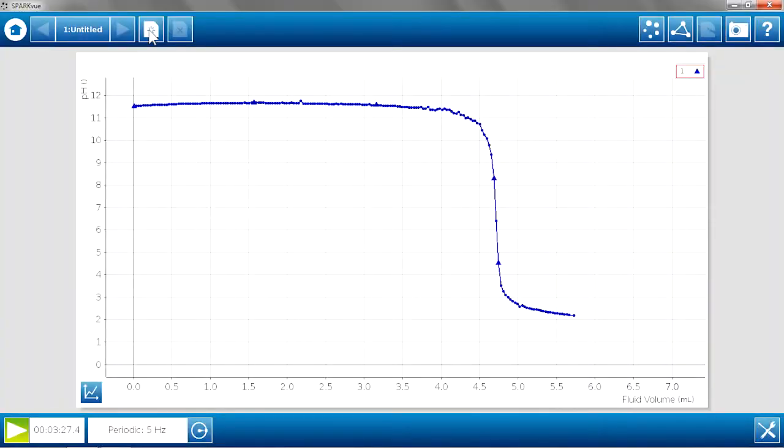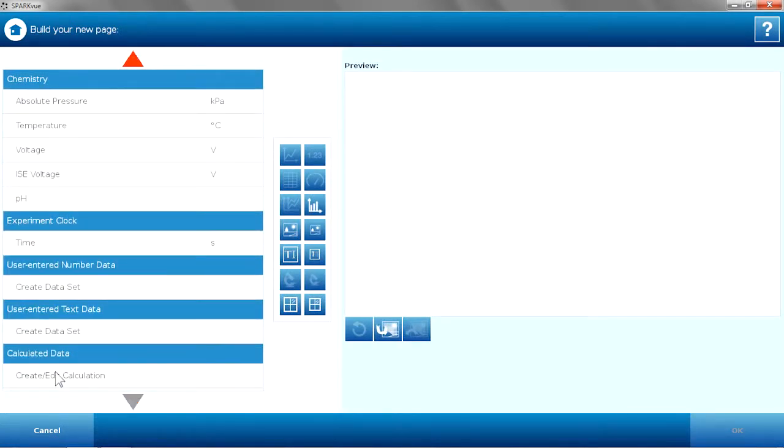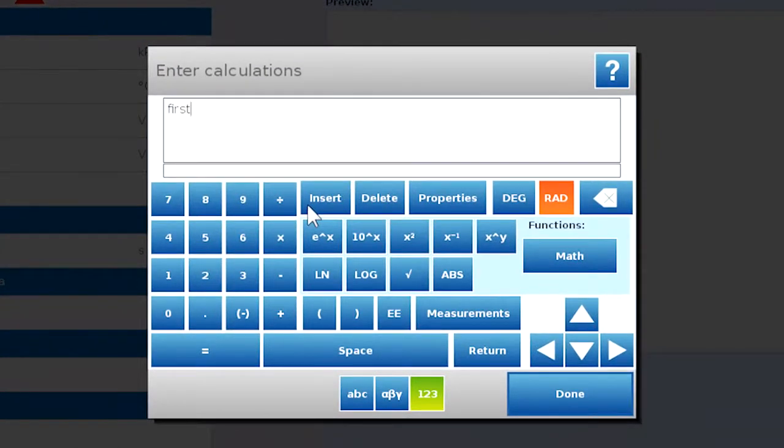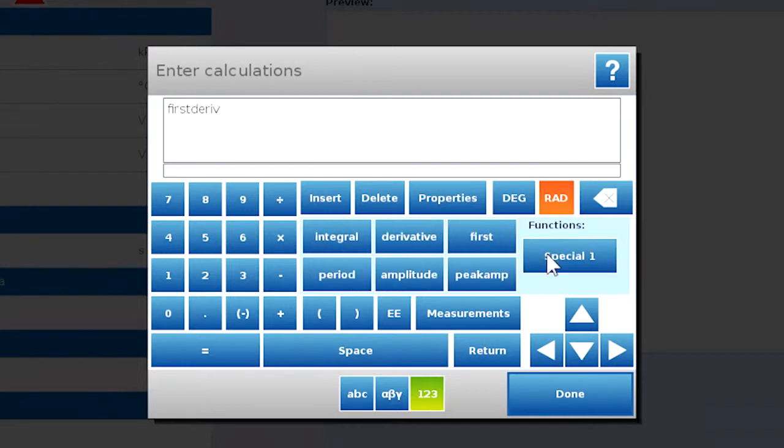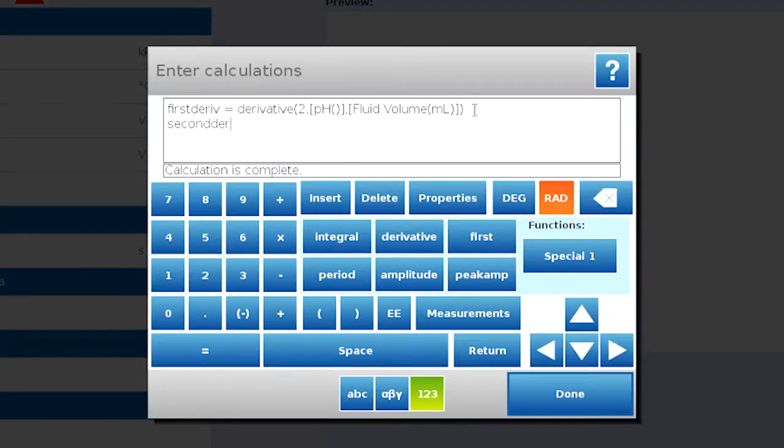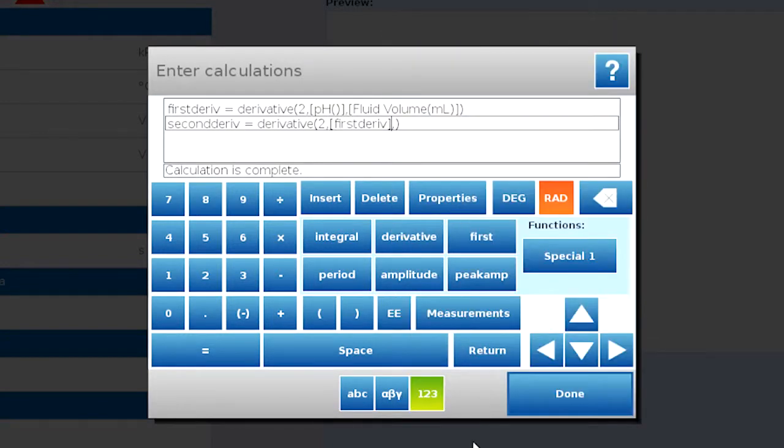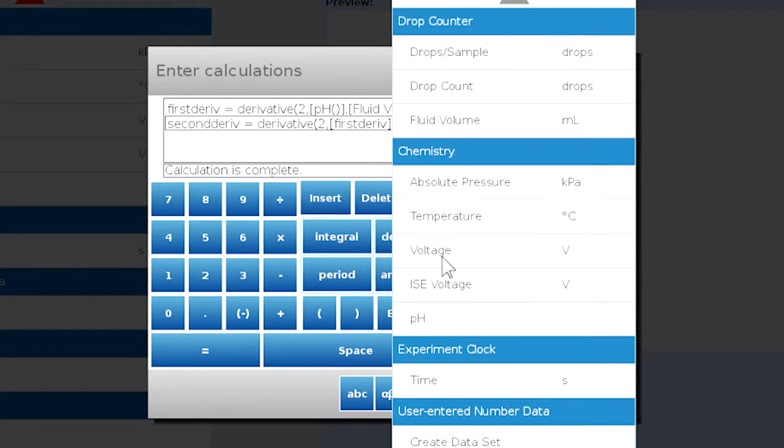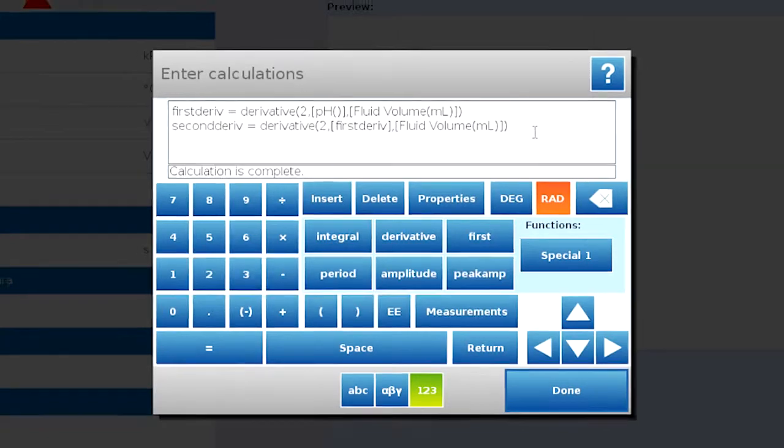We can go further with that. We can use the SparkView tools and our extra measurements to really analyze what's going on in the system. One great way to analyze the titration is to look at the second derivative. So I'm actually going to build a new graph that includes the second derivative of the pH. I'm going to build a page. Go to calculated data. And I'm going to do my first derivative with one of the math functions. And this is going to be a derivative of my measurement of pH versus fluid volume. And those calculations are complete. And now I'm going to do my second derivative. And this is going to be a derivative of that first derivative versus fluid volume. And those calculations are complete. So we'll hit done.